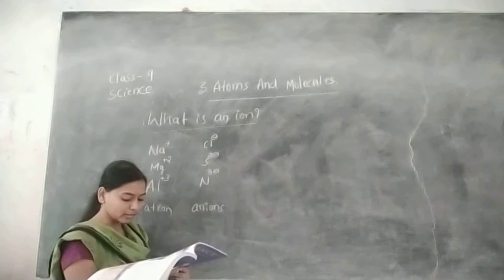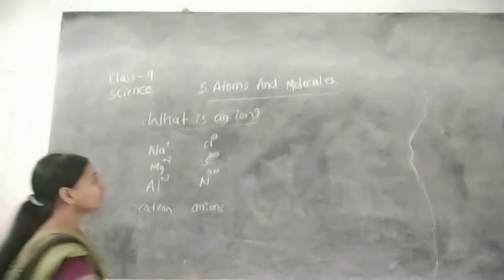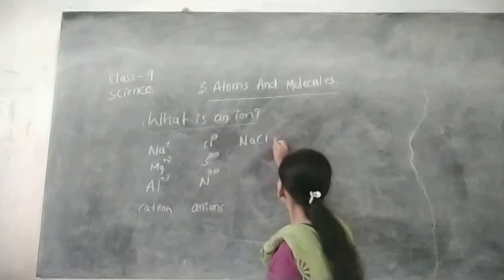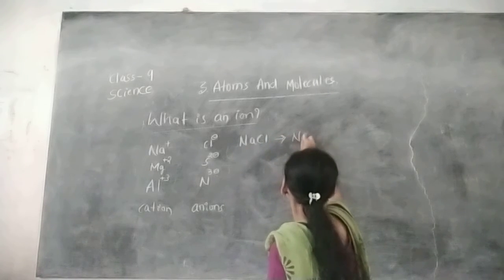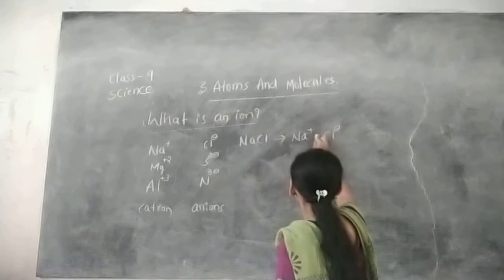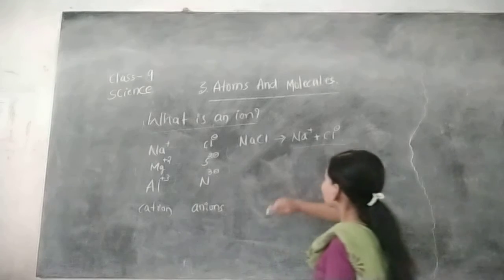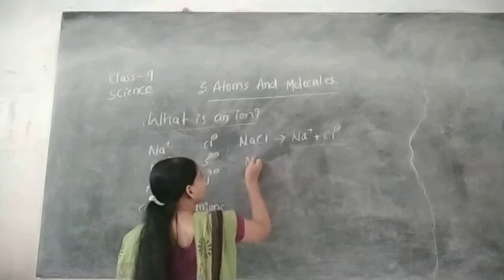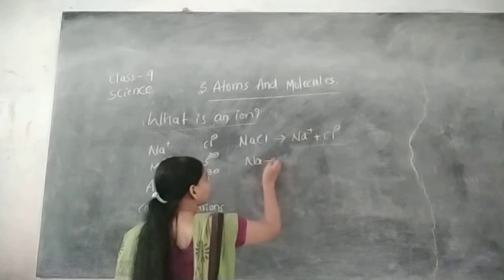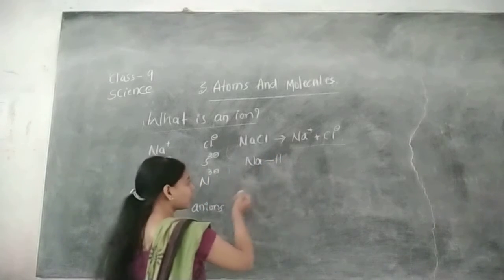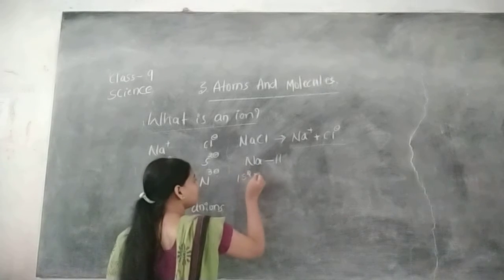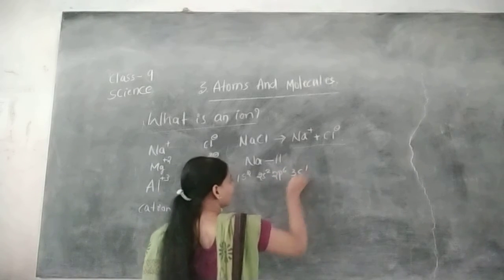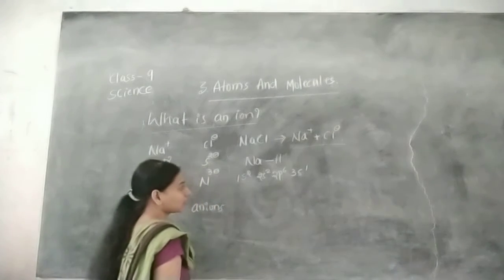Take for example sodium chloride. Sodium chloride forms ions: Na plus and Cl minus. Sodium has atomic number 11, and its electronic configuration is 1s2, 2s2, 2p6, 3s1. These are the sub-shells.